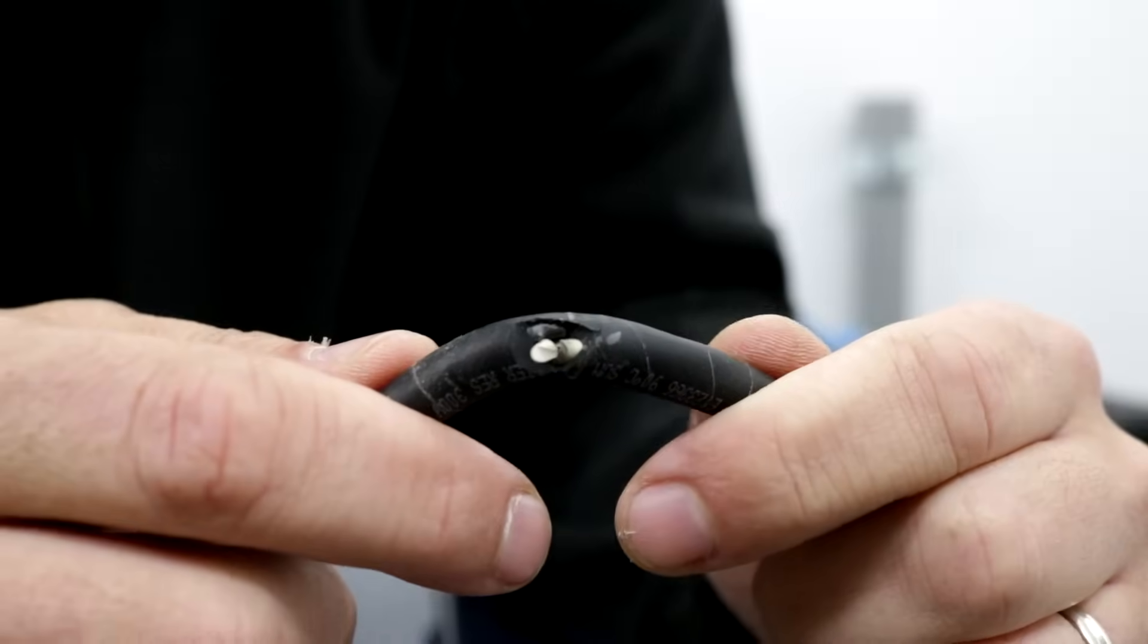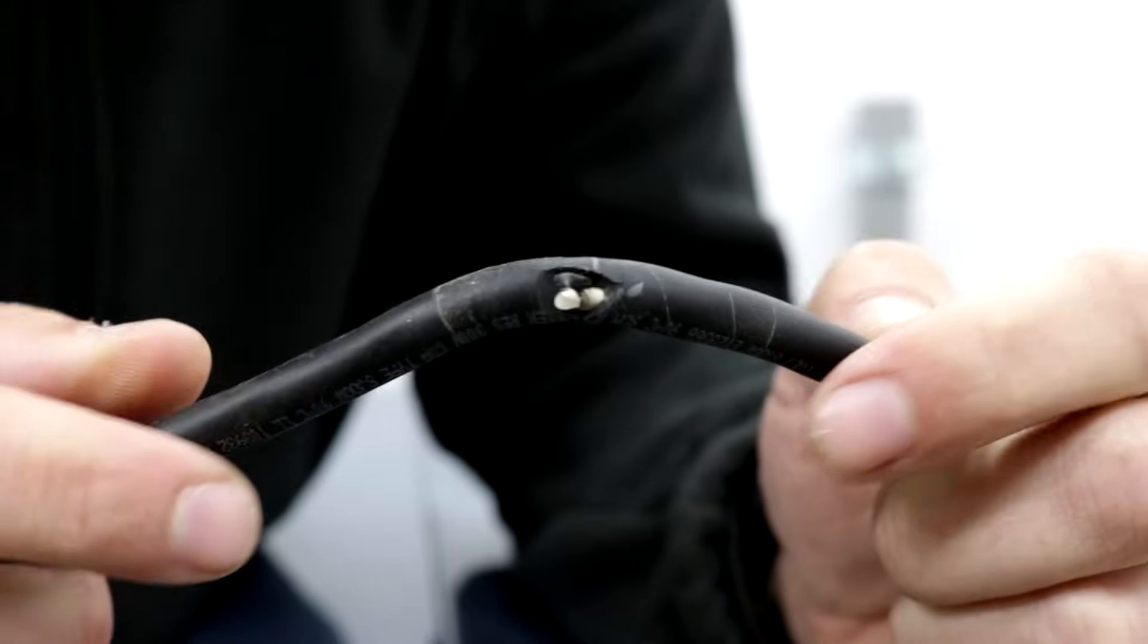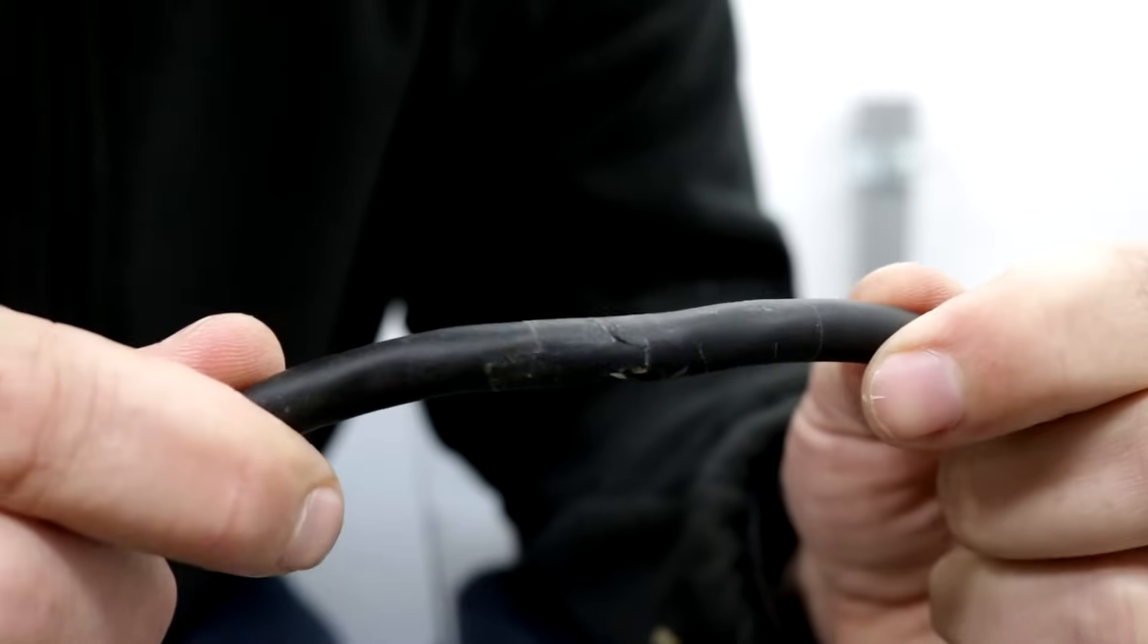Or let's say you're using an extension cord that has some sort of damage. Like, maybe you were outside and you were trimming your hedges and your hedge trimmer got your extension cord. That's what happened to me, and that tripped the breaker.